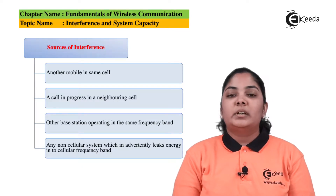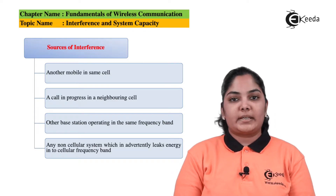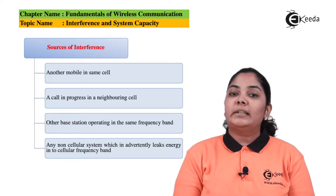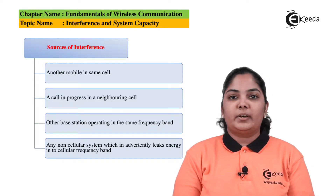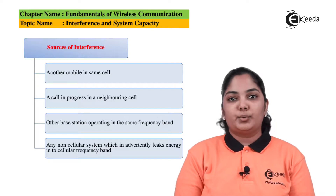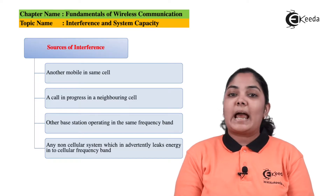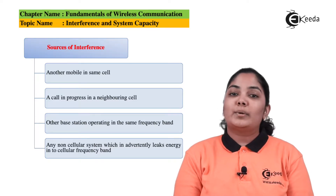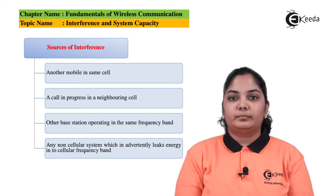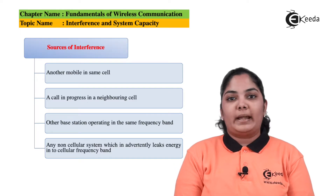The very first source of interference may be a mobile that is used in the same cell. The second source may be a mobile used in a neighboring cell. Another source is a base station other than ours using the same frequency set. Other sources include a non-cellular system that leaks energy into the cellular frequency band used for mobile communication.